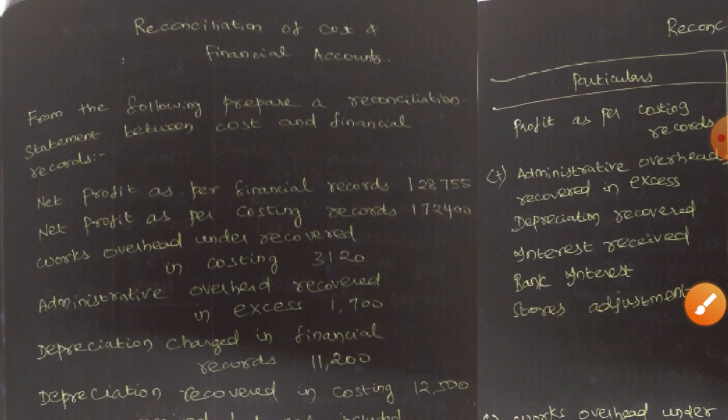The next information is works overhead under-recovered in costing: 3,120. Under-recovered means the amount has been recovered less — not in excess, but recovered short. When we have costing records as our base, under-recovered elements in costing have to be deducted. So works overhead under-recovered: 3,120 is shown as a negative value.